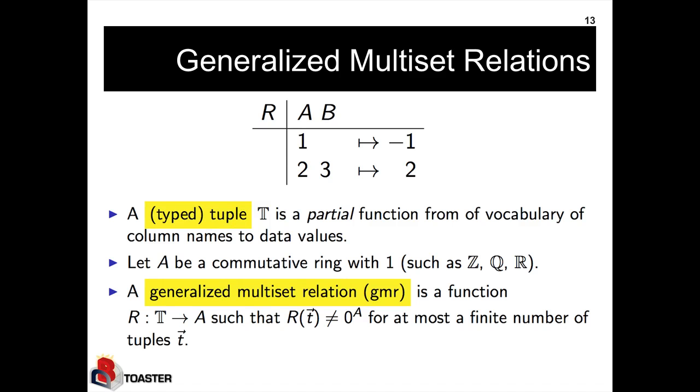So formally, we will define our generalized multiset relations as follows. We will talk of typed tuples, which are partial functions from a vocabulary of column names to data values. So in the example, the first tuple has a schema A, that means it is defined on A, and maps the column A to 1, and is not defined on B. Our vocabulary here is A and B. The second tuple is defined on both A and B, and maps A to 2, and B to 3.